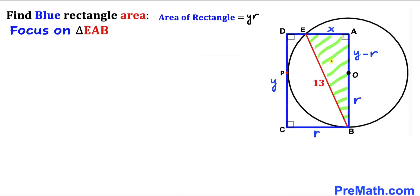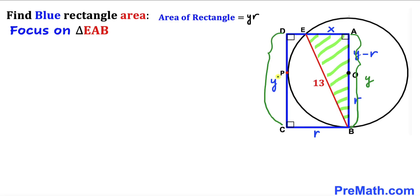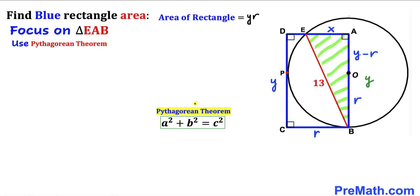Let's focus on right triangle EAB, whose side lengths are x, 13, and AB equals y, since AB equals CD. We'll apply the Pythagorean theorem: a squared plus b squared equals c squared. The longest leg is c (which is 13), and the other sides are a equals x and b equals y.